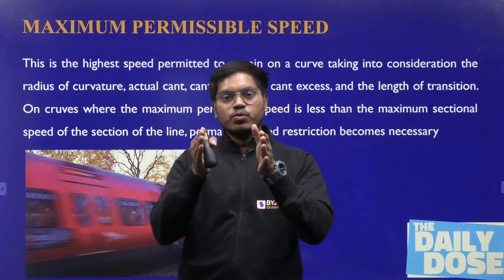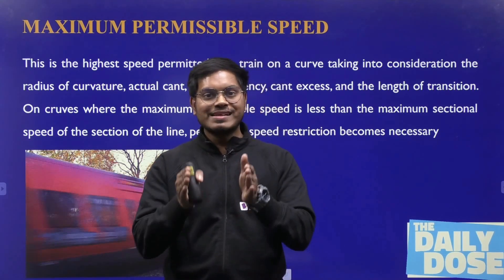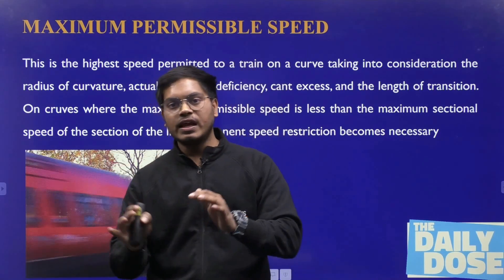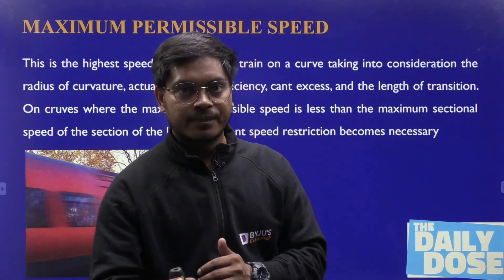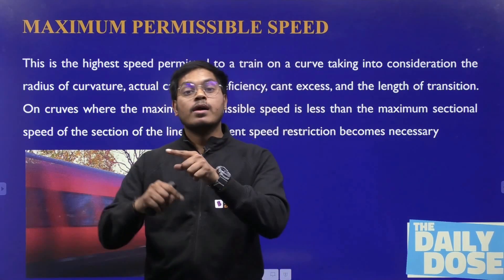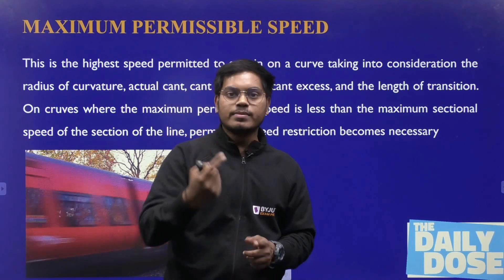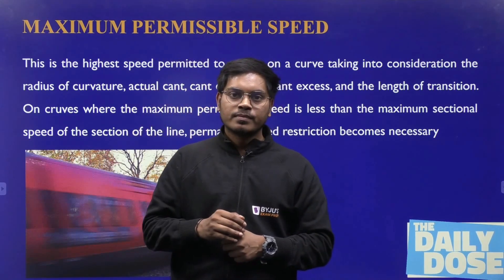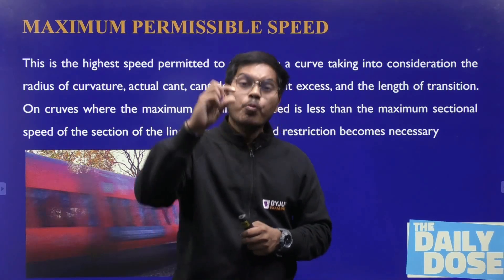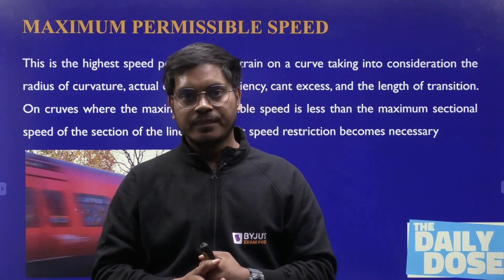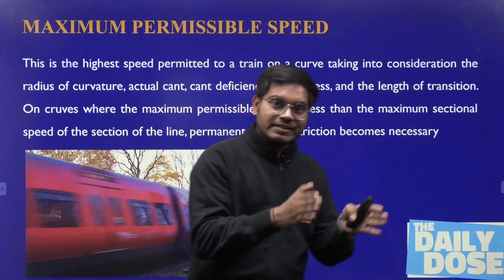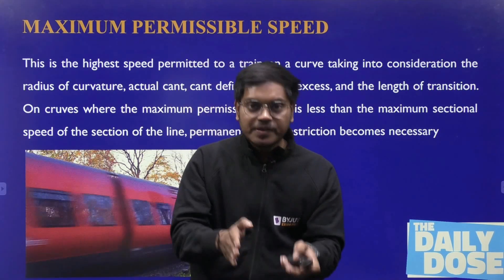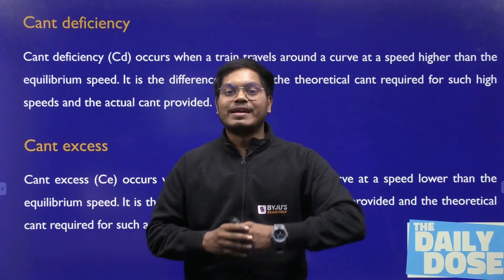When the train is moving at equilibrium speed and comes on the curve, it experiences very good comfort with no overturning. But a train moving faster than the equilibrium speed — at maximum speed — will require more cant than what is provided. How much more is required is called cant deficiency. The cant provided corresponding to maximum velocity is called theoretical cant, and the difference between theoretical cant and actual cant is called cant deficiency.